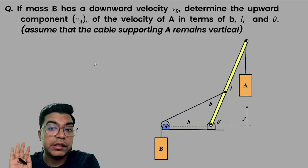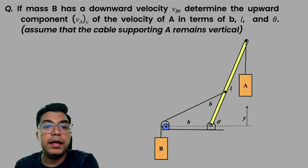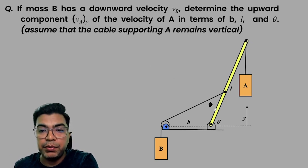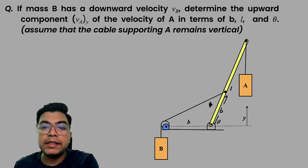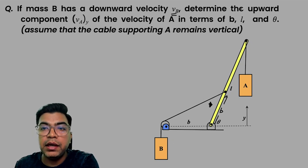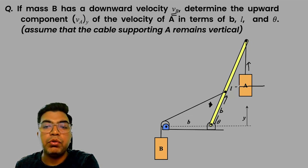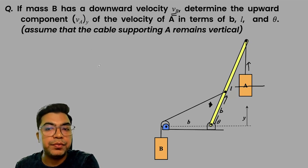Now for the next question: the label B refers to a particular length in the diagram. The question asks us to find the upward component of velocity vA, given that mass A has a velocity vB. We don't need to find the lateral velocity — the question only asks for the upward component, though you could calculate the lateral motion as well.